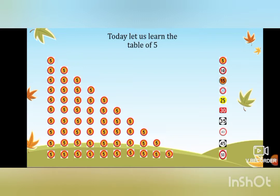So, if you see: five ones — we have the answer 5. Five twos — we get the answer 10. Five threes — we get the answer 15. Five fours — we get the answer 20. Five fives — we get the answer 25. Five sixes — we get the answer 30. Five sevens — we get the answer 35. Five eights — we get the answer 40. Five nines — we get the answer 45. Five tens — we get the answer 50.